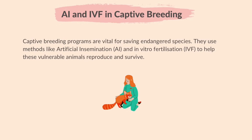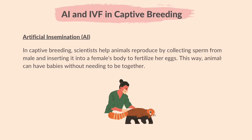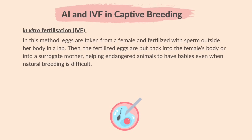Captive breeding programs are vital for saving endangered species. They use methods like artificial insemination (AI) and in vitro fertilization (IVF) to help vulnerable animals reproduce and survive. In artificial insemination, scientists collect sperm from a male and insert it into a female's body to fertilize her eggs, so animals can have babies without needing to be together. In IVF, eggs are taken from a female and fertilized with sperm outside her body in a lab, then the fertilized eggs are put back into the female's body or into a surrogate mother, helping endangered animals have babies even when natural breeding is difficult.